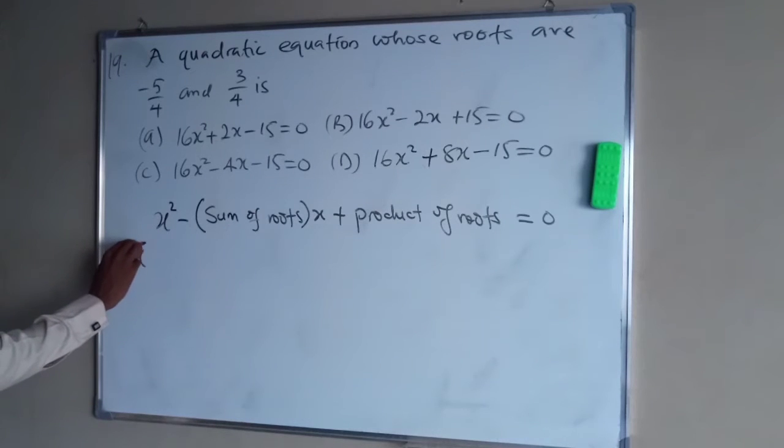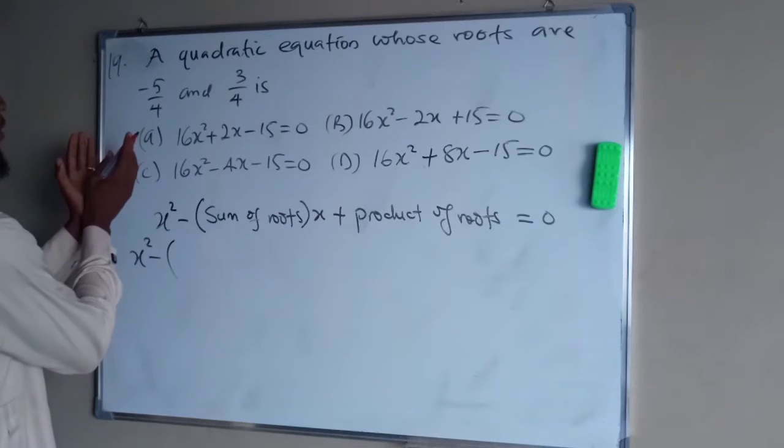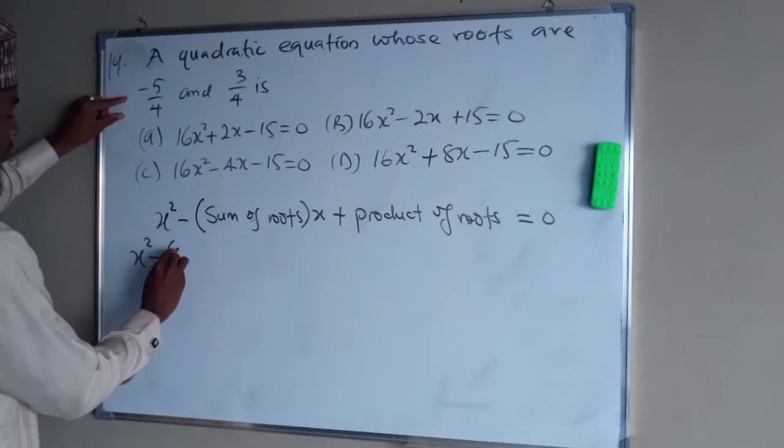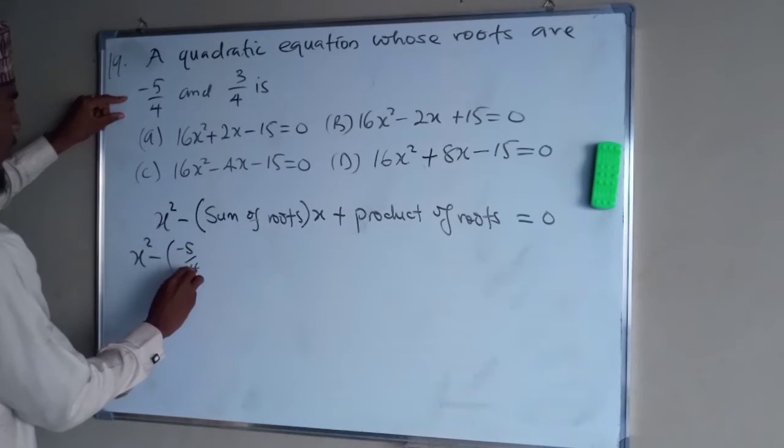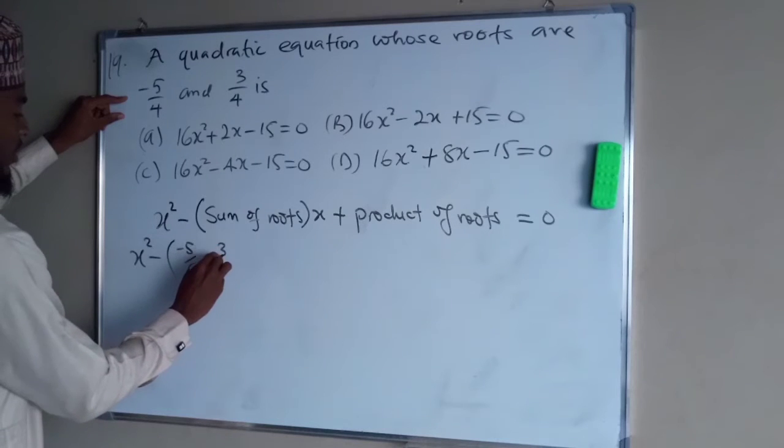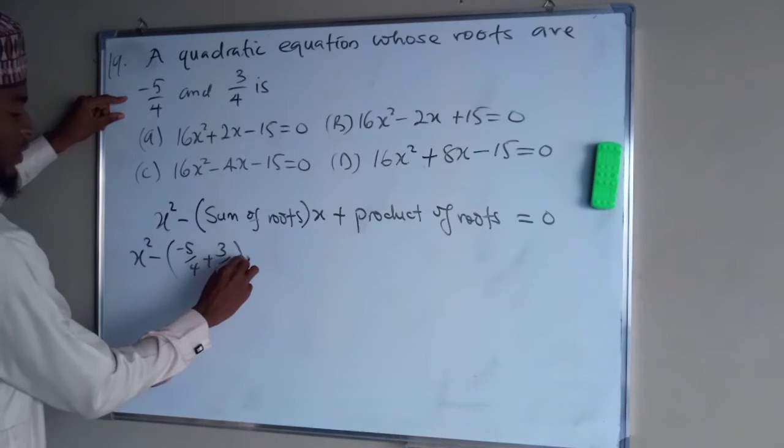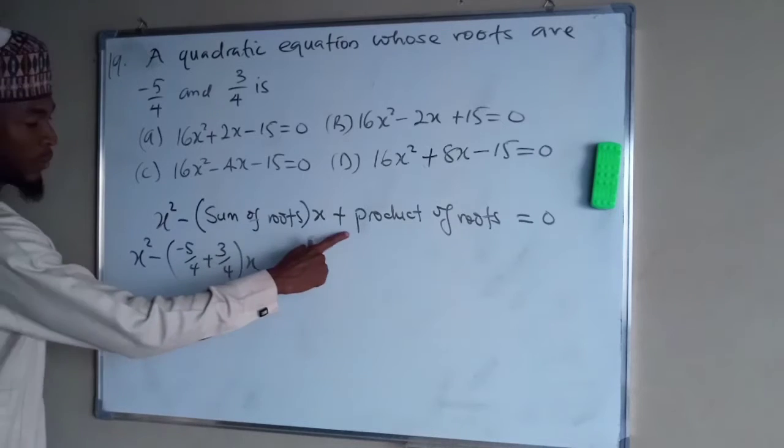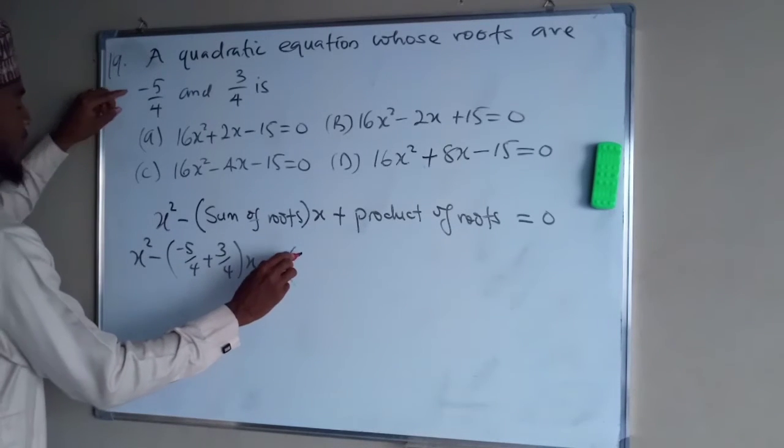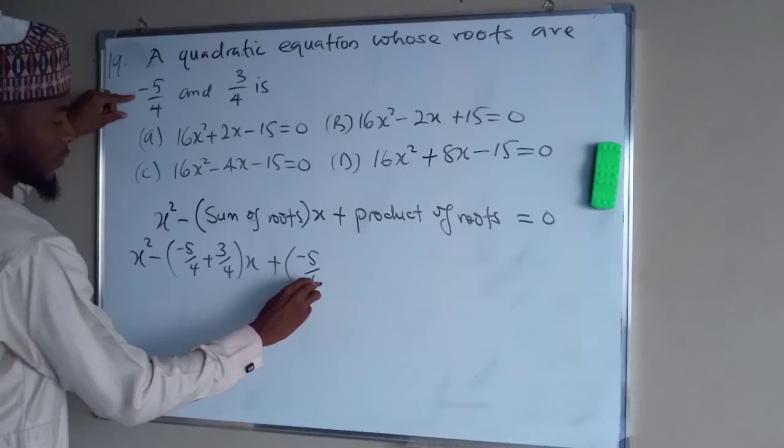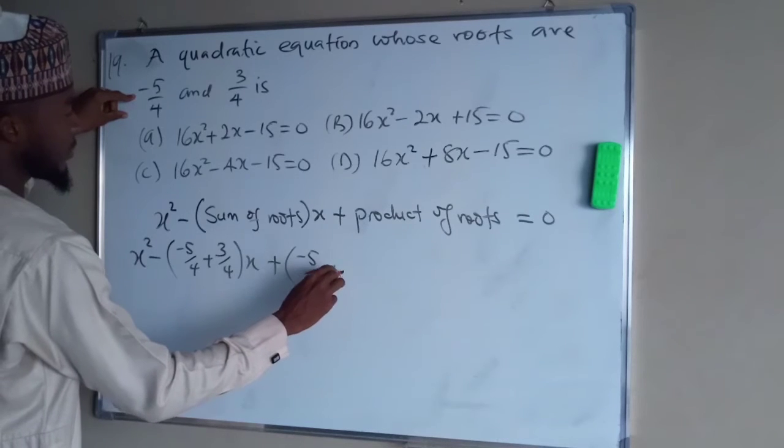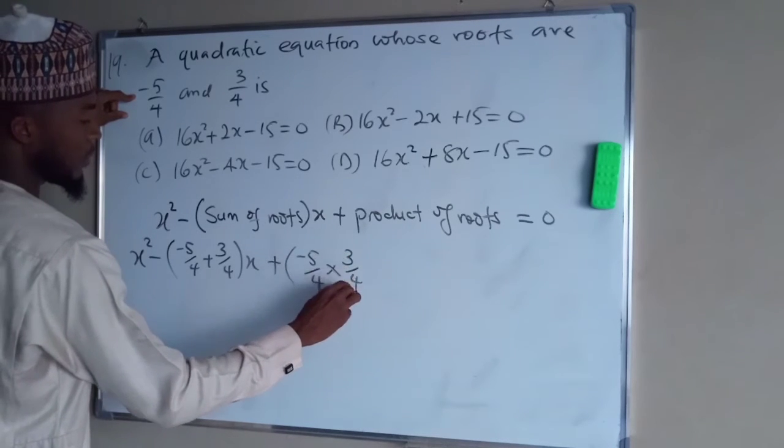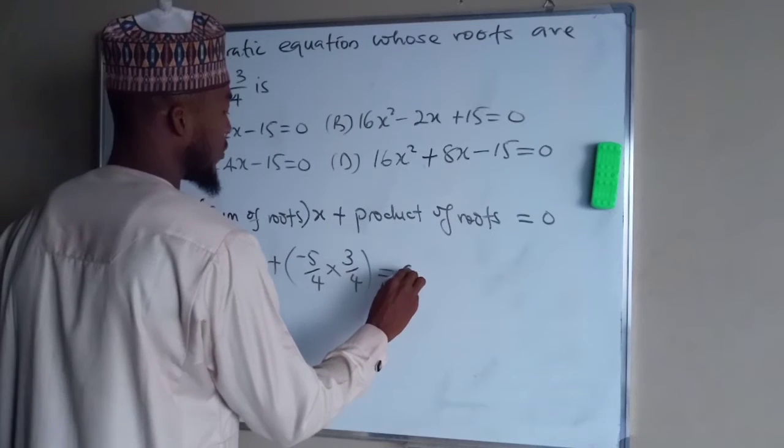So we substitute this. Sum means to add the two roots together, which is minus 5 over 4 plus 3 over 4, all times x. Then we add the product. We times them together: minus 5 over 4 times 3 over 4. All this equal to 0.